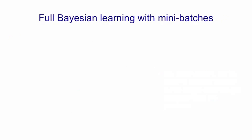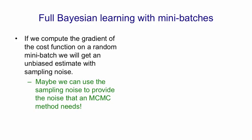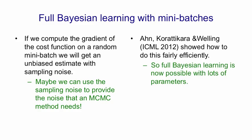Full Bayesian learning can actually be done with mini-batches. When we compute the gradient of the cost function on a random mini-batch, we're going to get an unbiased estimate but with sampling noise. And the idea is to use that sampling noise to provide the noise that a Markov chain Monte Carlo method needs. It's a very clever idea. Recently, Welling and his collaborators made it work nicely so that they could fairly efficiently get samples from the posterior distribution over weights using mini-batch methods. This should make it possible to use full Bayesian learning for much larger networks where you have to train them with mini-batch to have any hope of ever finishing training them.